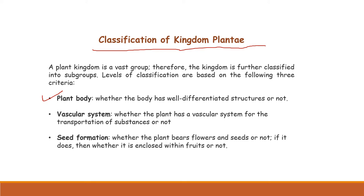The second criterion is the vascular system. Plants have xylem and phloem, which together constitute the vascular system. Whether the vascular system is present or absent in the plants under consideration is another basis for classifying them into different groups.